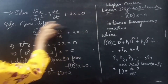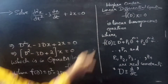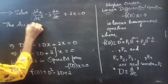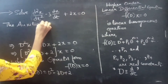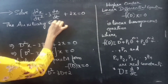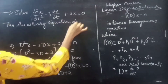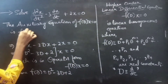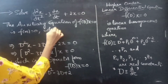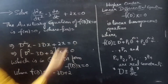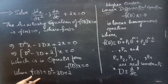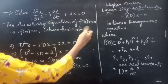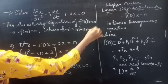Now we'll find the solution to the given equation using the auxiliary equation. For f(D)·x = 0, we set f(m) = 0, where f(m) is obtained by replacing D with m in f(D), giving f(m) = m² minus 3m plus 2.